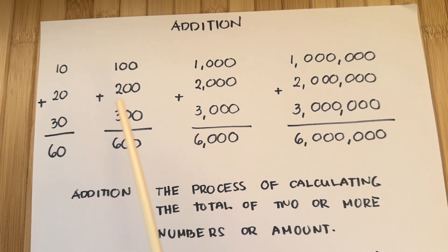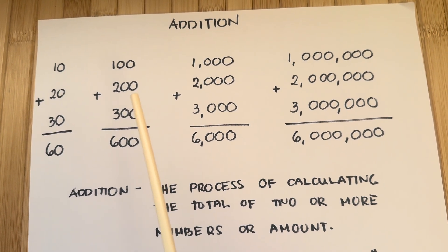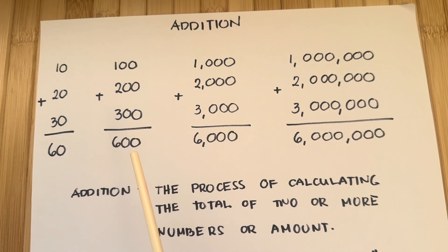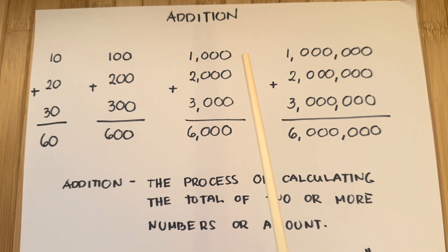Next, 100 plus 200 plus 300 equals 600. Here's another example.